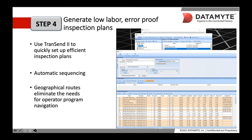Step four: generate low-labor error-proof inspection plans. Now that we've completed a torque study and set our residual spec limits, we can utilize Transcend software to quickly generate low-labor error-proof inspection plans. With Transcend, you can set up inspection plans that make sense geographically in relationship to both the plant and the part being inspected, so that operators are following the most effective and efficient measurement plan possible, thereby eliminating wasted time and effort.